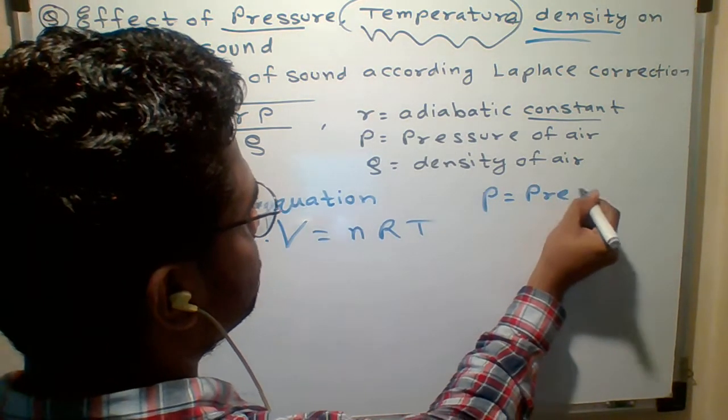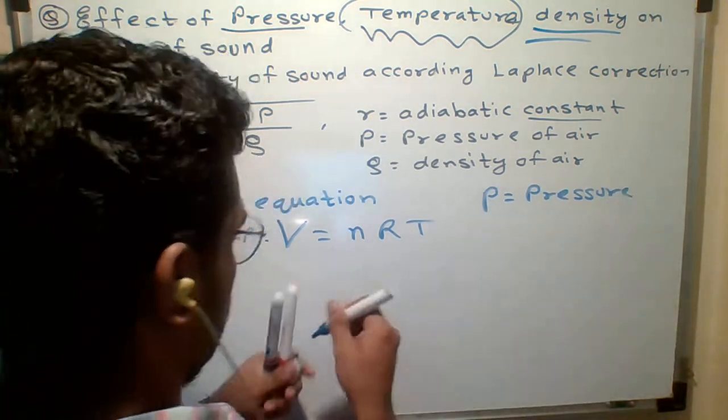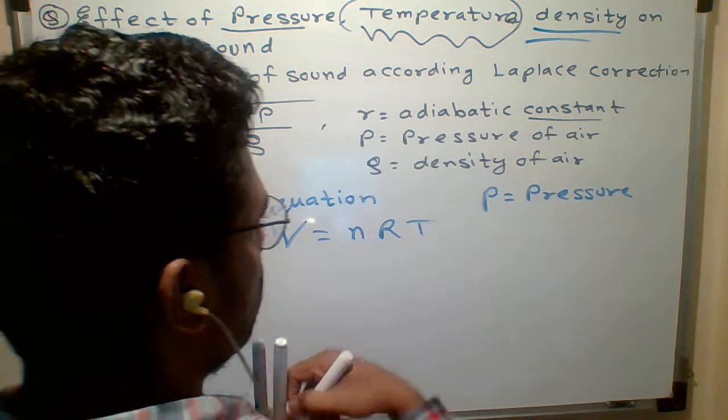P is what? Pressure. Capital V is volume.